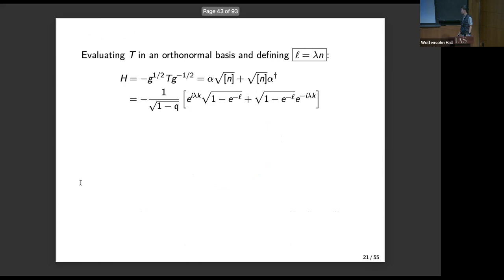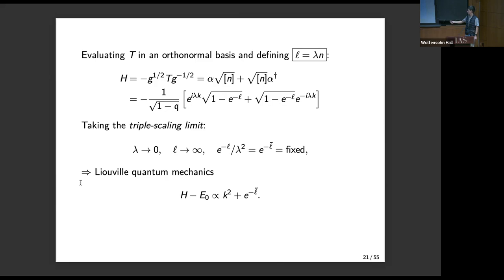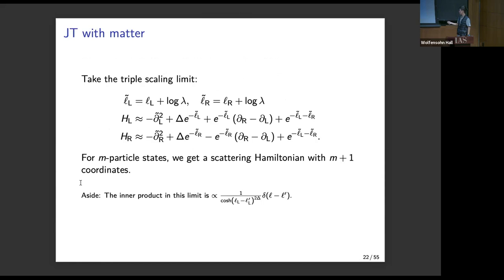When you compute the transfer matrix T in an orthonormal basis, you get an expression where L equals lambda times n and k is the momentum conjugate to L. If you then take the triple-scaling limit — L to infinity, lambda to zero, holding their product fixed — you recover on the nose the JT Hamiltonian. This is a microscopic derivation of that formula. With matter, you get expressions for the left and right Hamiltonians and the left and right lengths — expressions that were not known even in JT gravity. The general case gives some m+1-dimensional scattering problem, where you have m+1 coordinates corresponding to the various lengths inside the wormhole.